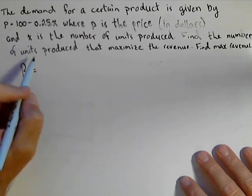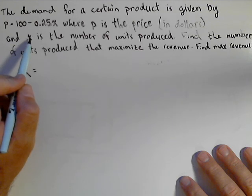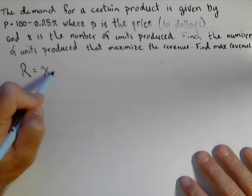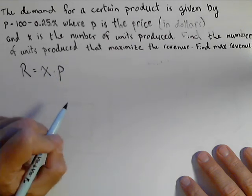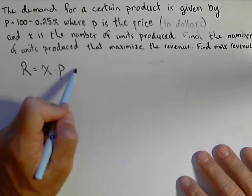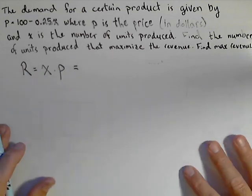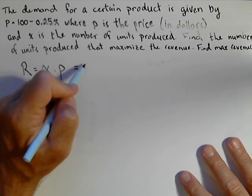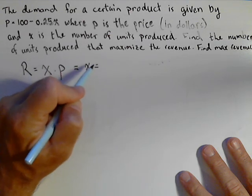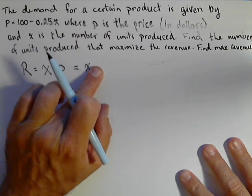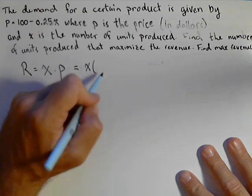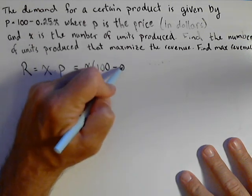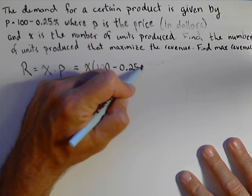To simplify the situation a little, we're going to assume that they sell all that they produce. So revenue is the number of units they sell times the price they charge per unit, which, given by our linear demand function, is x times (100 - 0.25x).